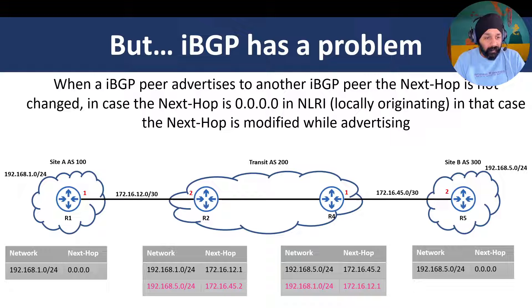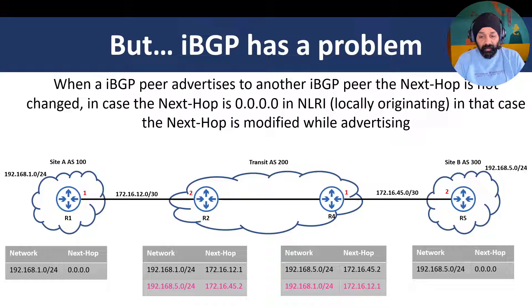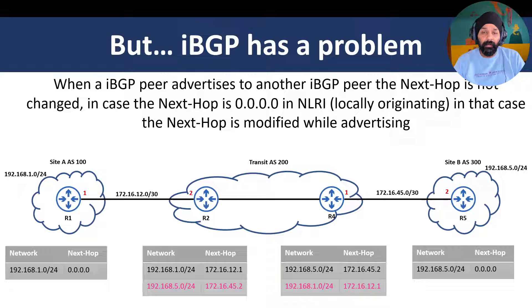In this topology, Router 1 is connected to Router 2, and Router 5 is connected to Router 4. Router 2 and Router 4 are within the same AS200 domain. Router 1 is advertising 192.168.1.0/24 and Router 5 is advertising 192.168.5.0/24. The connection between Router 1 and Router 2 is eBGP, and between Router 4 and Router 5 is also eBGP. Between Router 2 and Router 4, it is iBGP since they share the same AS number.